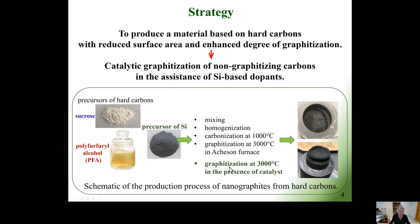The second way is that the pure hard carbon is heat treated at standard graphitization temperature but in the presence of silicon vapor. The resulting materials have slightly different properties, but they both resemble the atomic scale structure of graphite produced from soft carbons.